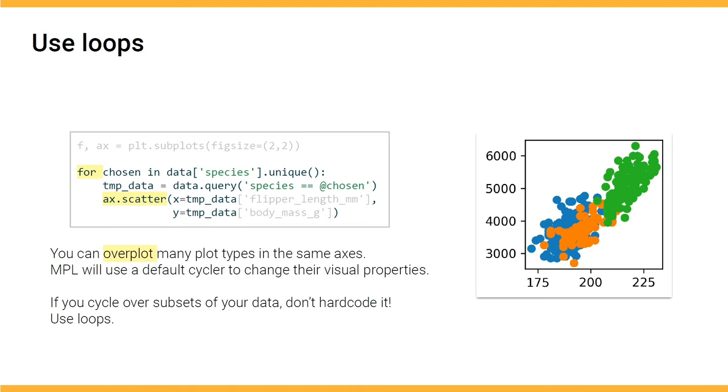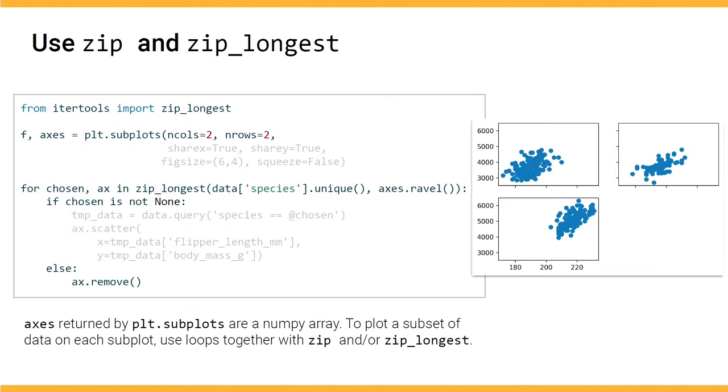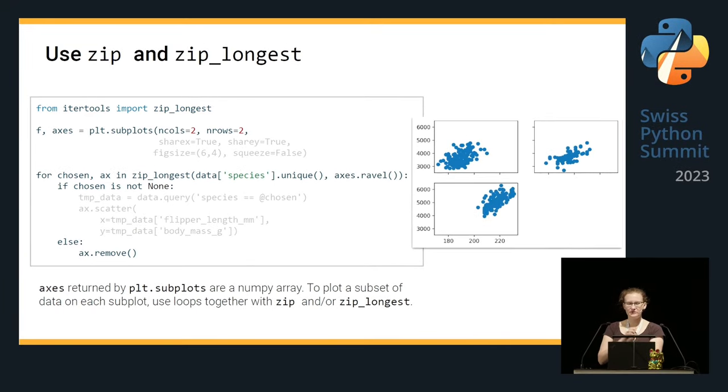One thing is to use loops. And this may sound obvious, but it's actually super important. So, if you want to cycle through a subset of the data, don't hard-code those subsets here, but use loops. If you over-plot over the same axis object, it will just get added to the same axis. Use loops also in combination with zip and zip longest. And zip longest is a variation of the zip that comes from itertools that iterates until the longer variable is exhausted. So, if you want to make a visualization using a technique called small multiples, where you create a small chart for each subset of the data, you can generate the subplots first, and then using zip longest, you can iterate until your data runs out, and then you can remove all the outstanding axes from your chart.